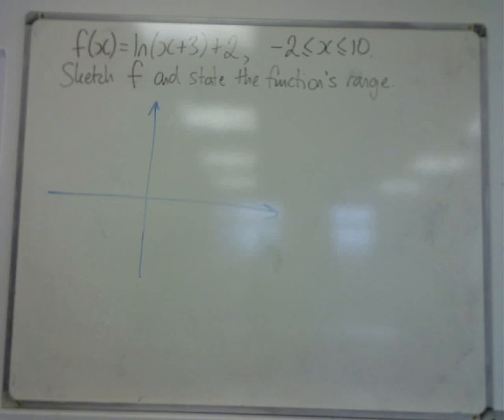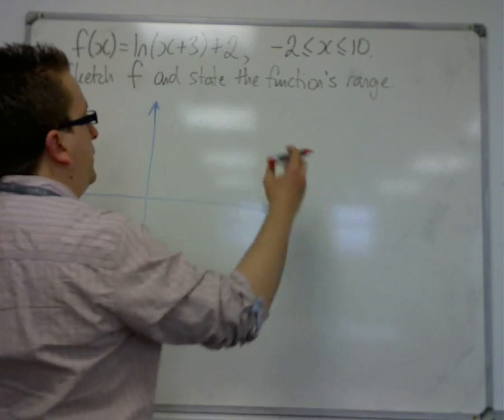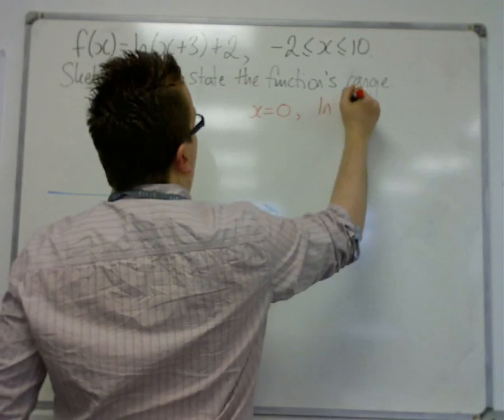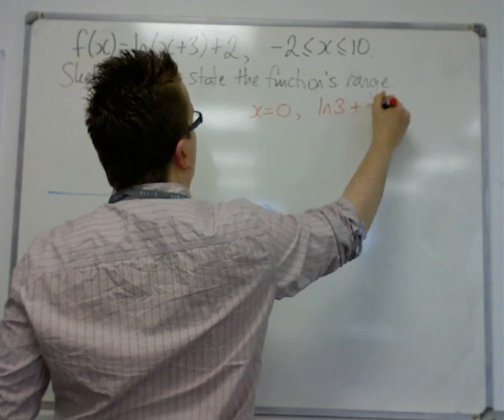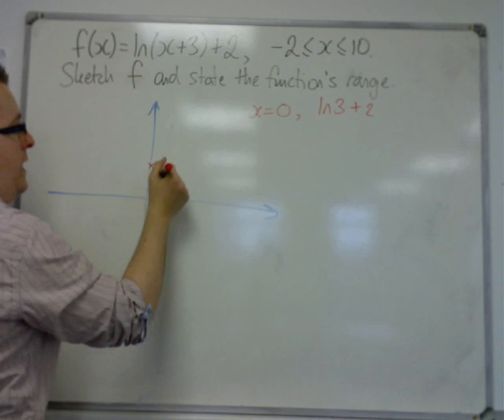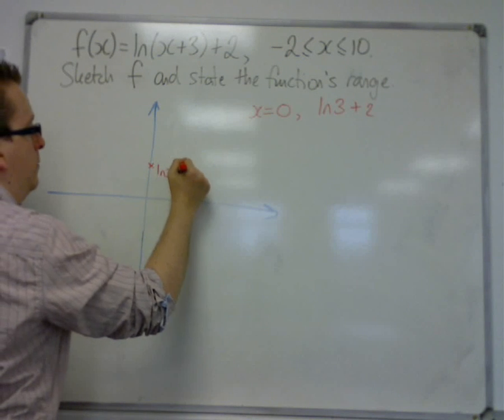Well, we could do that, might as well. So when x is 0, we have log of 3 plus 2, because x is 0. So when x is 0, we're here, log 3 plus 2.